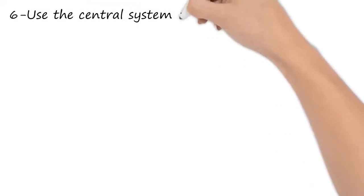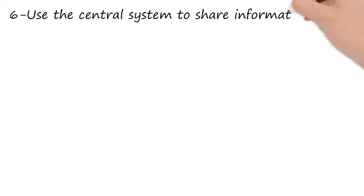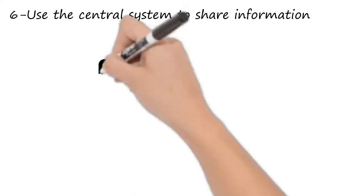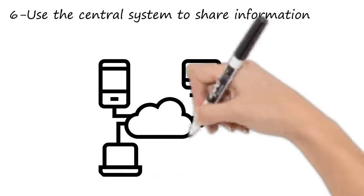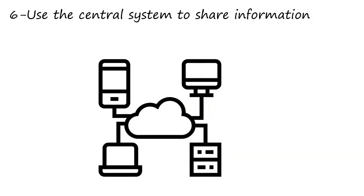Tip number six is that all information should be shared in some sort of central system. You shouldn't have people writing stuff on post-it notes and scraps of paper or little books. Everything should go onto a central system. Every phone number, every contact with a customer, every job that's needing to be done. Everything should be shared.